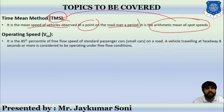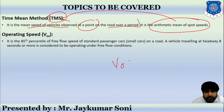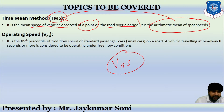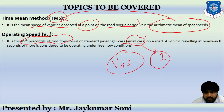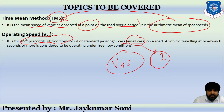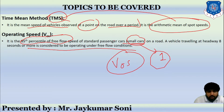Operating speed, denoted as Vos, is basically the 85th percentile of free flow speed of a standard passenger car — a small car whose PCU is considered as one passenger car unit. A vehicle traveling at a headway of eight seconds or more is considered to be under operating speed conditions.